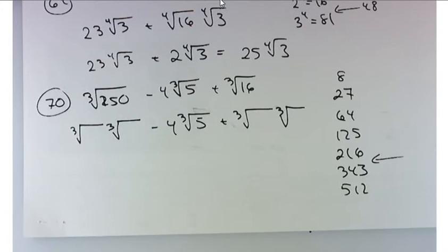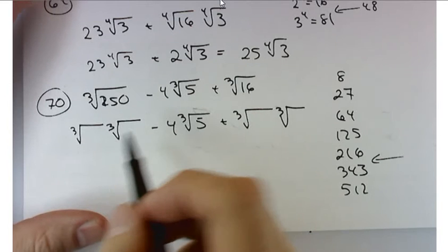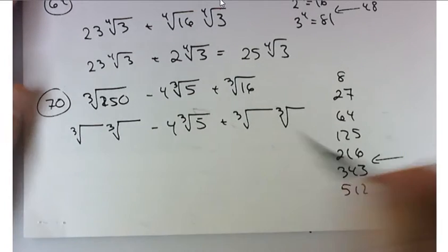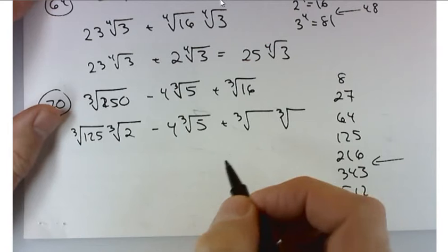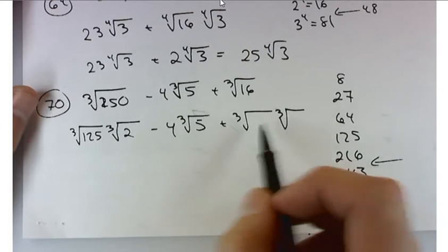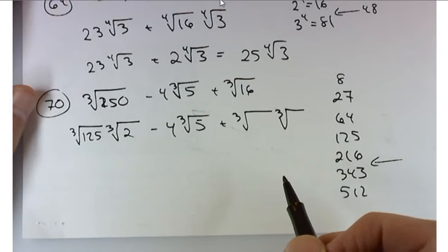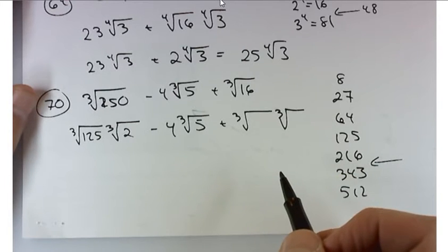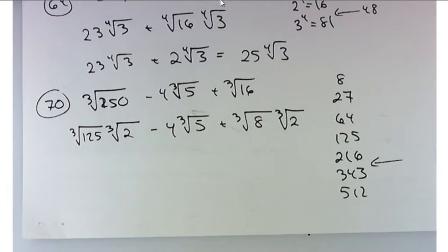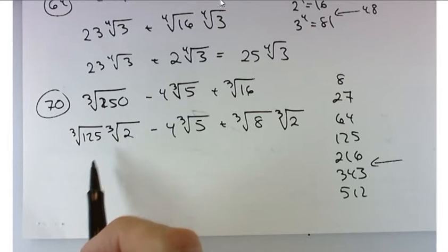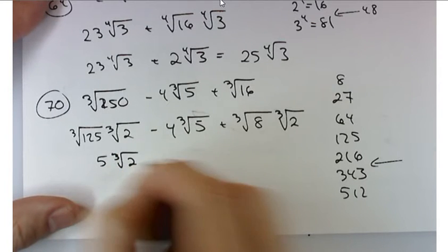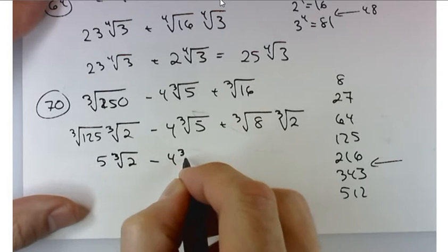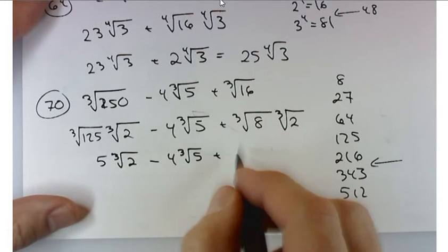So Amanda, did you find a number that divides 250 evenly from this list? Good, 125 times 2. Thank you. Dylan, how about one from this list? Eight and two. So the idea here is that these first radicals are things you can simplify. Cube root of 125 - well, what do you cube to get 125? Five. So five times the cube root of two minus four times the cube root of five plus, what's the last one? Two times the cube root of two.